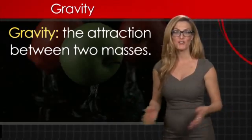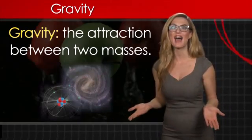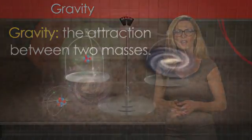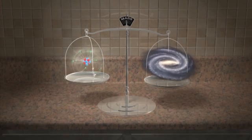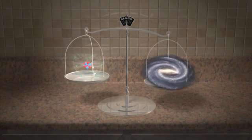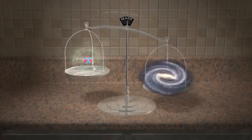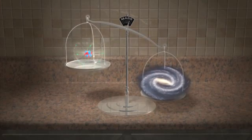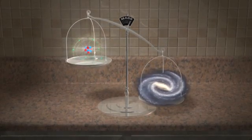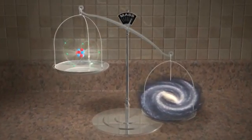Every object in the universe, from the smallest atom to the largest galaxy, is made of matter. The amount of matter in something makes up its mass. Things that have a lot of matter in them have a high mass and a high gravitational force, or pull. More mass in an object means it has a greater attraction to other objects.